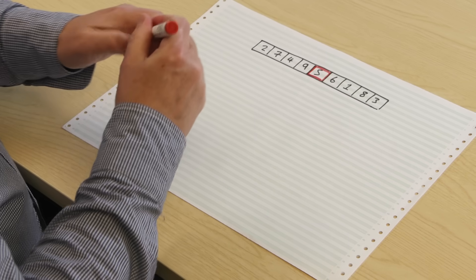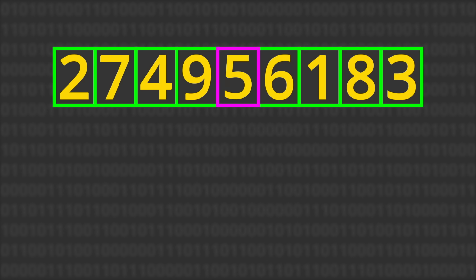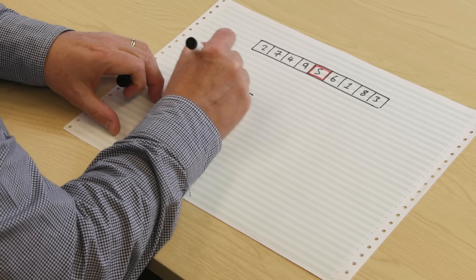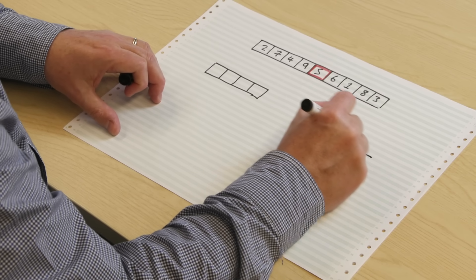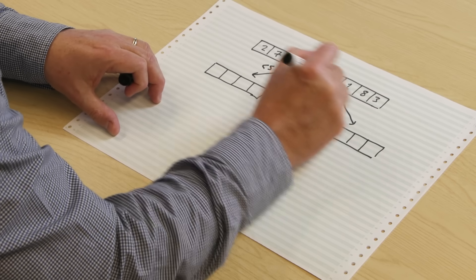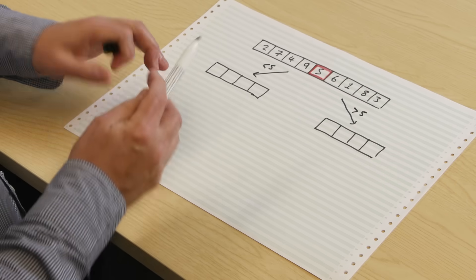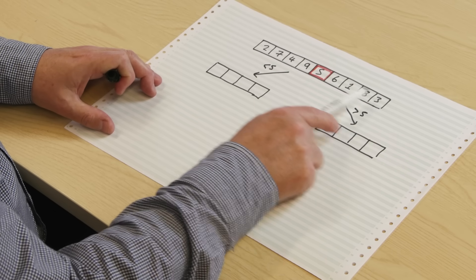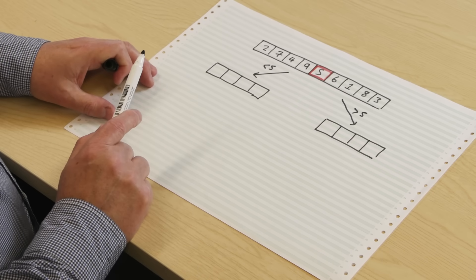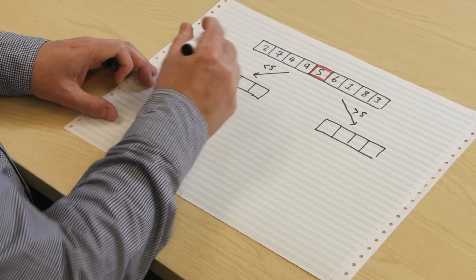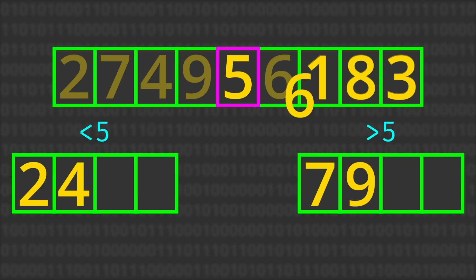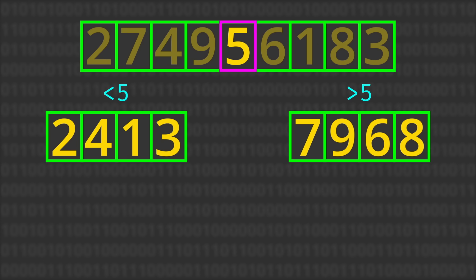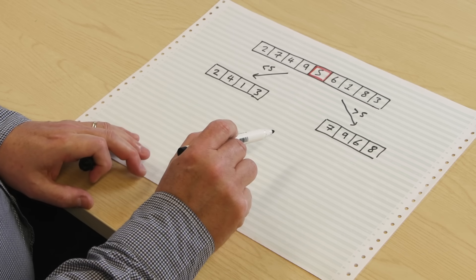We've picked our pivot value. The next step in the algorithm is that we're going to divide up the remaining numbers depending on whether they're less than or greater than the pivot value. We're going to send the numbers which are less than five down the left-hand side — we'll end up with four of these. And we're going to send the numbers which are greater than five down the right-hand side — and we'll also end up with four of these. This is just a really simple process: we go through the list apart from the pivot. Two is less than five, so that goes here. Seven is greater than five, so that goes here. And we keep going until we've got four numbers less than five and four numbers greater than five.